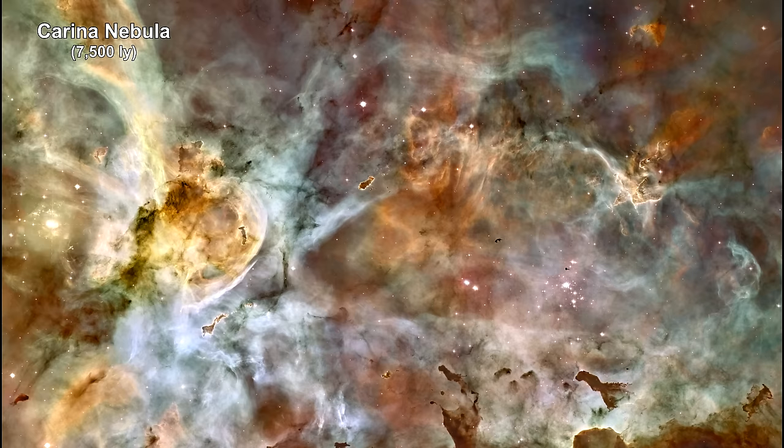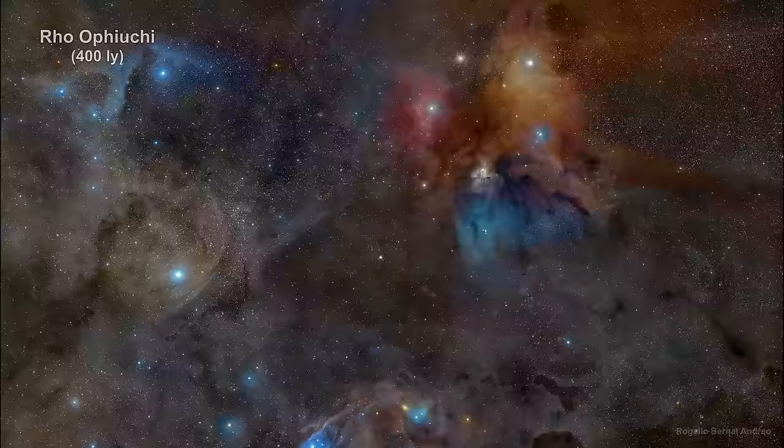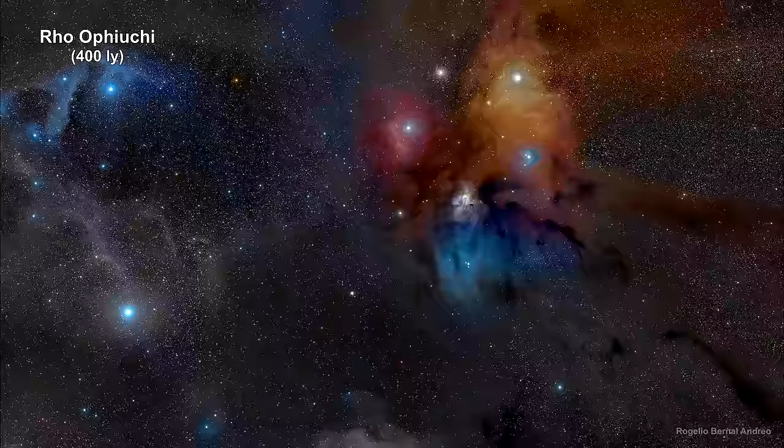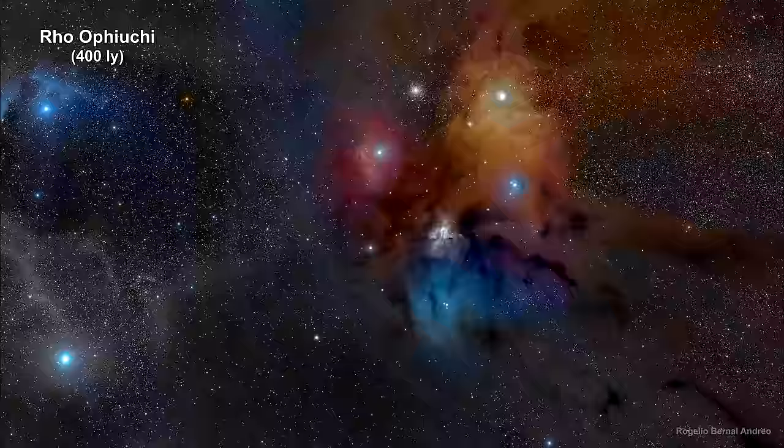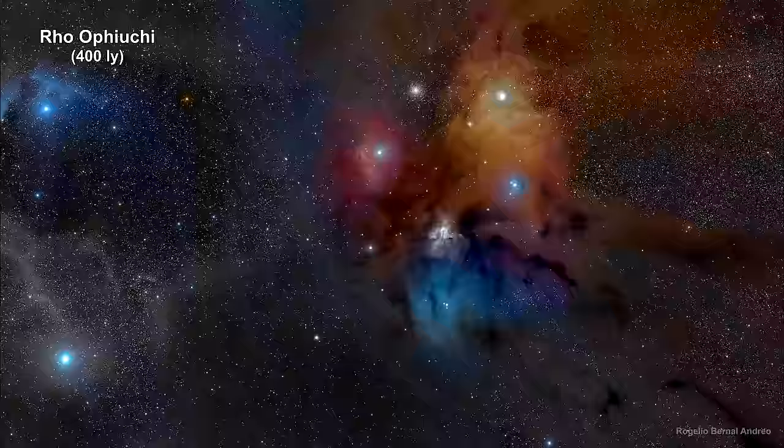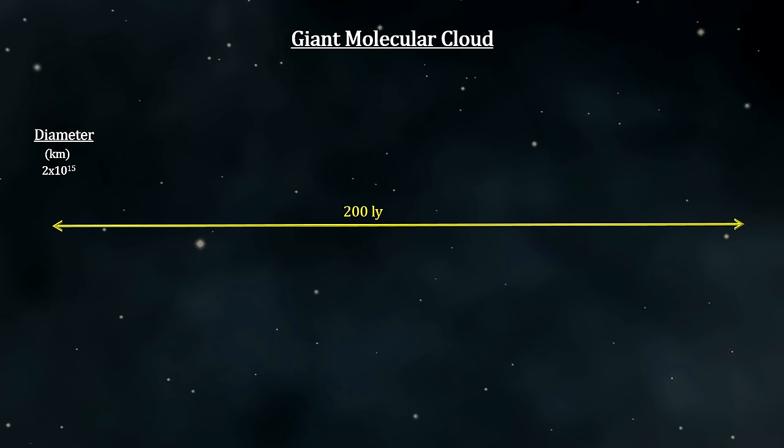Thousands of giant molecular clouds exist in the disk of our galaxy. Each has hundreds of thousands to a few million solar masses of material. We've seen some of these clouds in the Starbirth Nebula segment of the How Far Away Is It? video book. Giant molecular clouds can be as large as 600 light-years wide. This illustration is 200 light-years in diameter.